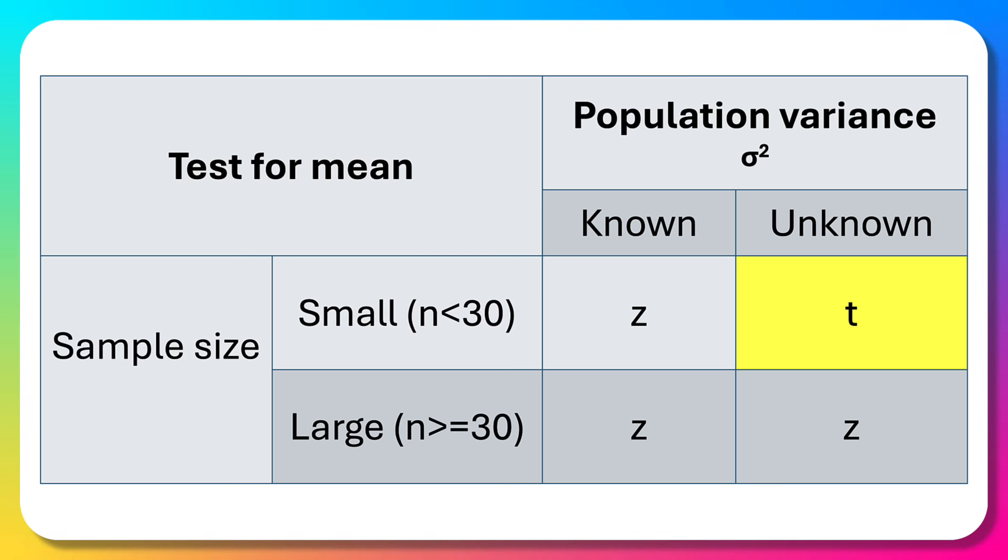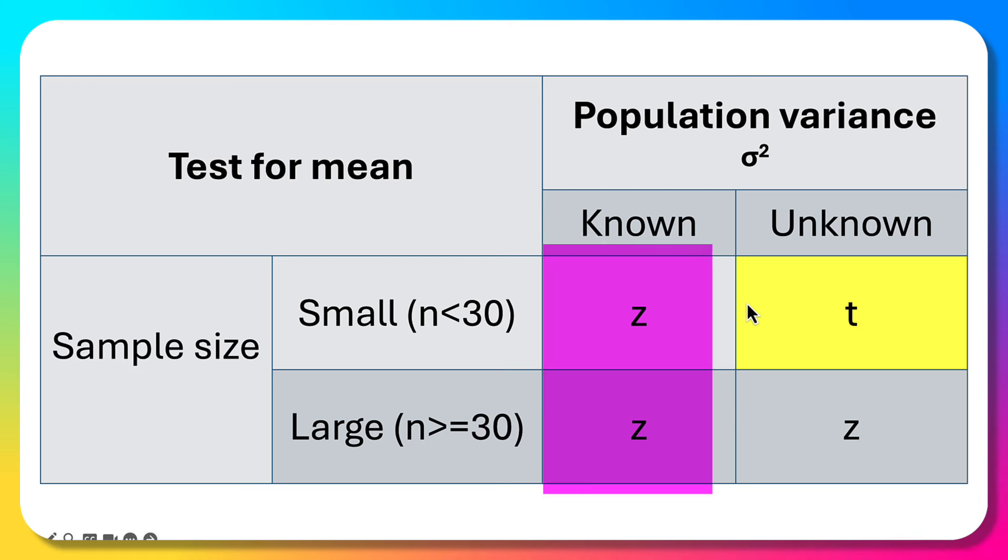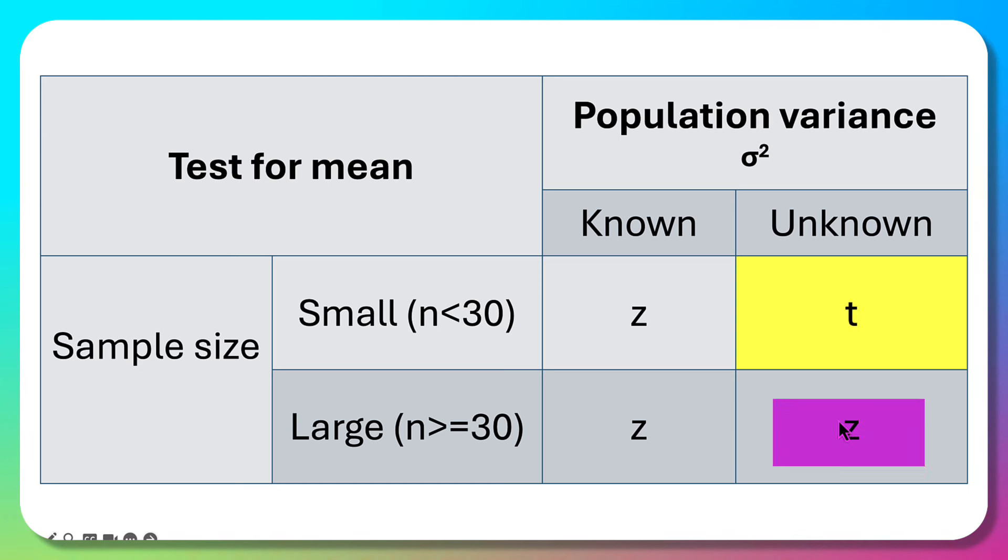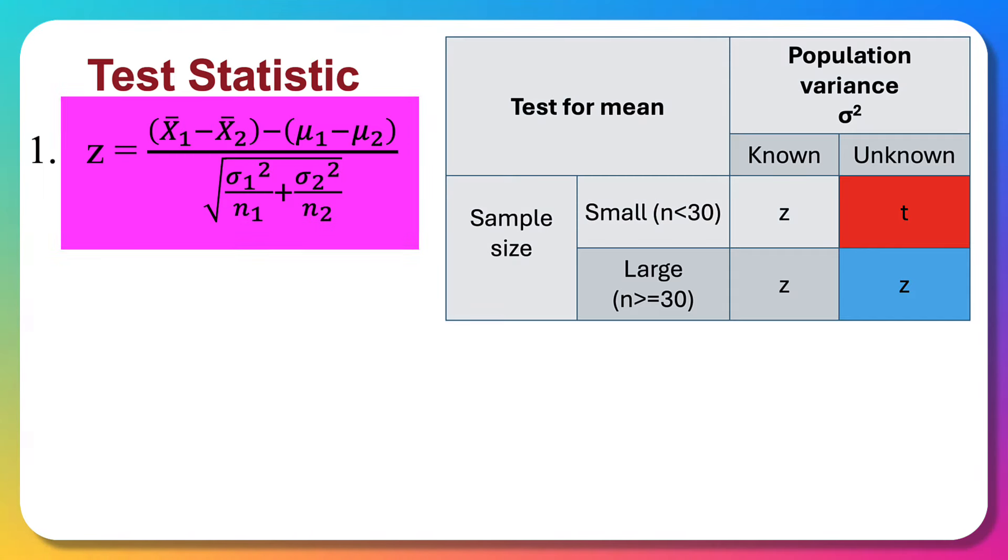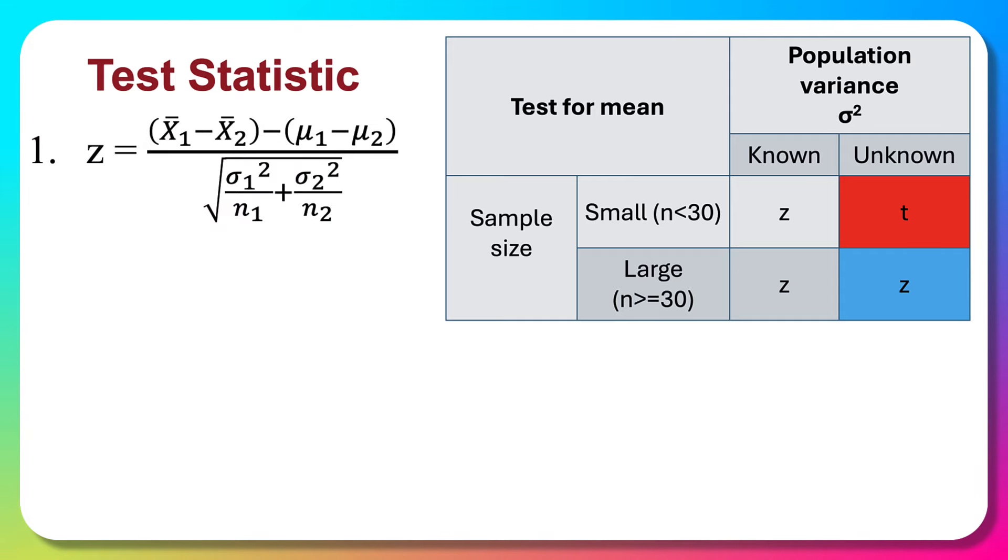Now, how do we determine which formula to use? When population variance is known, we use the z-test. When population variance is unknown, we use t-test for small samples (n<30) and z-test for large samples (n≥30).